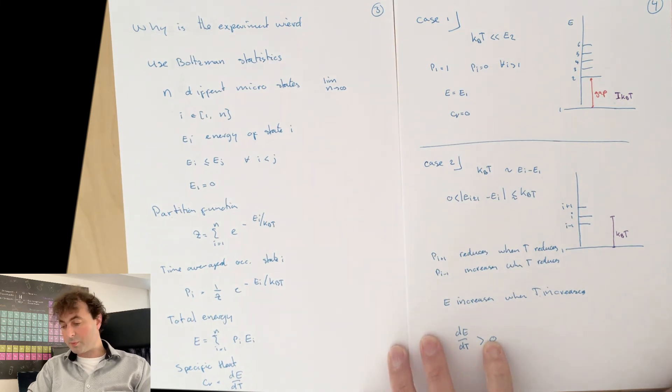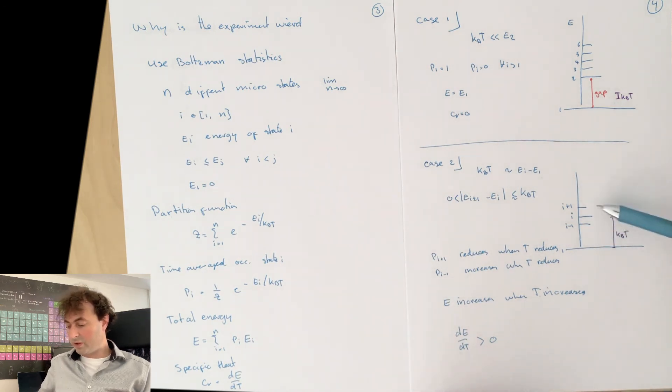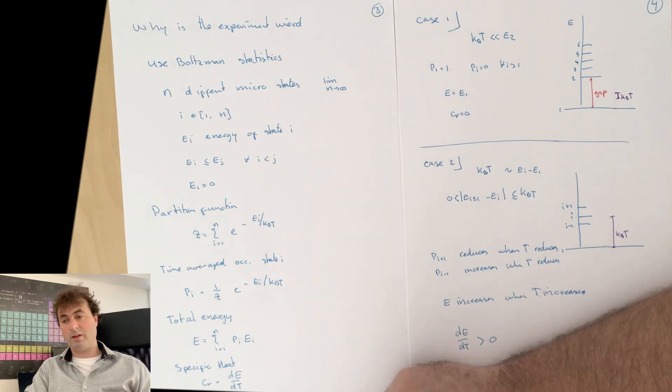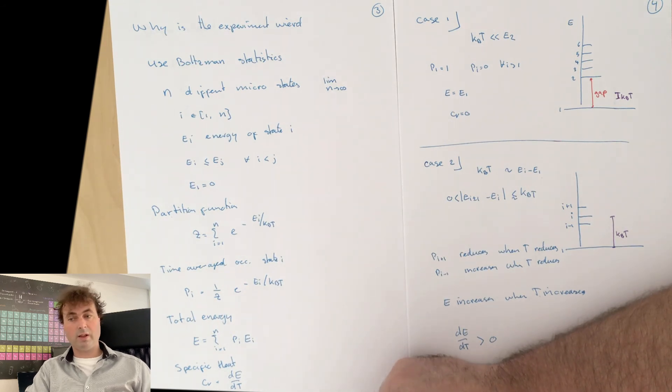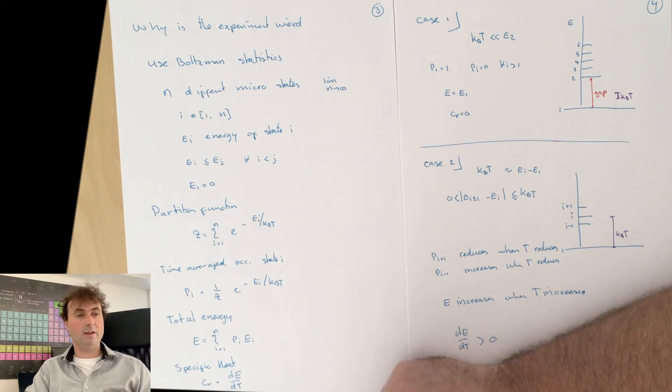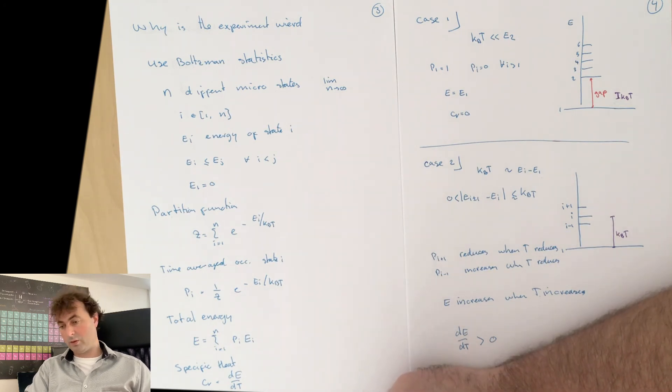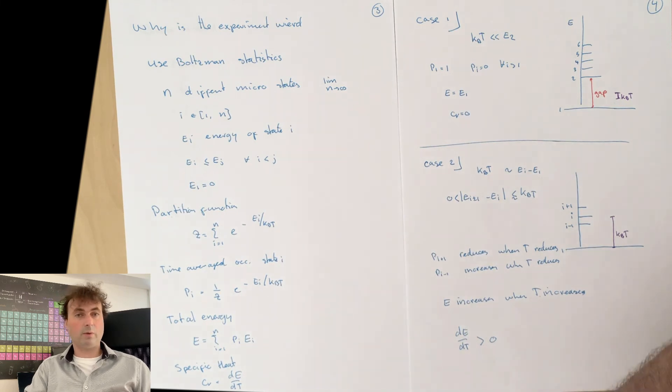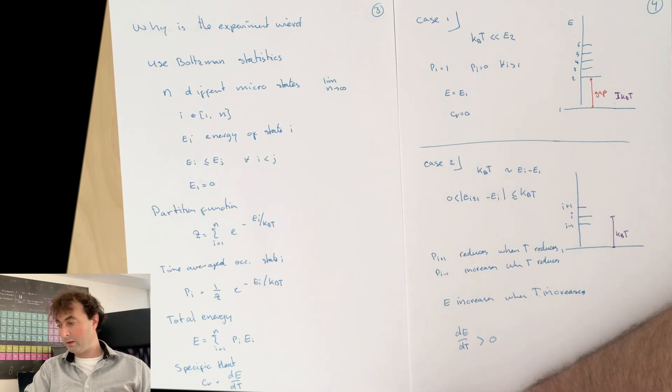In all cases, the specific heat is a very powerful method to get information about the number of states that you have at the energy where you measure the specific heat. So how many states do I have with an excitation energy that is equal to the temperature? That's something that a specific heat tells you about. So it's very often useful to look at the specific heat as one of the first measurements for a material that you want to understand, to see what goes on and what the statistics is and the possible states that we have.